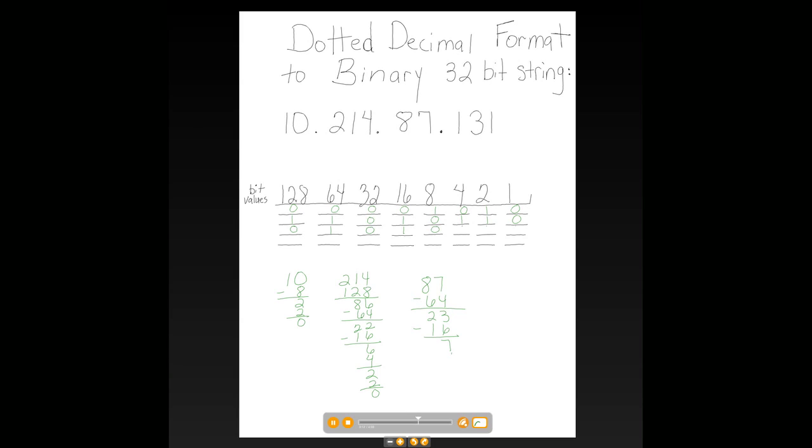Turn 8 off. 4 on. That leaves us 3. 2 and 1 will give us 3. And that uses up all the values. So 64 plus 16 plus 4 plus 2 plus 1 would equal 87.